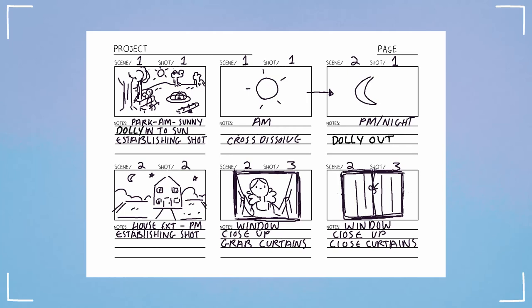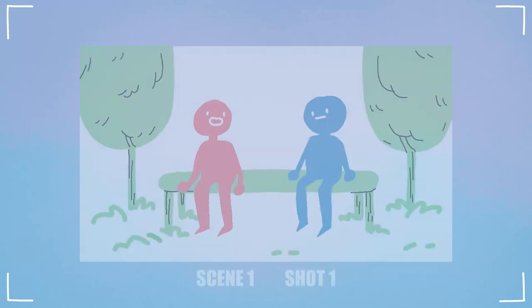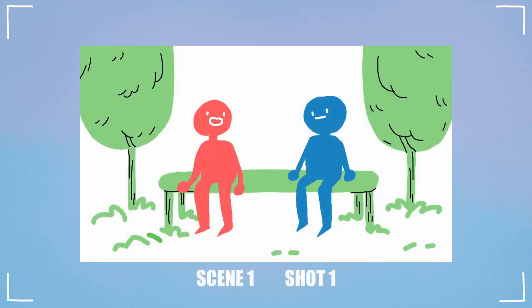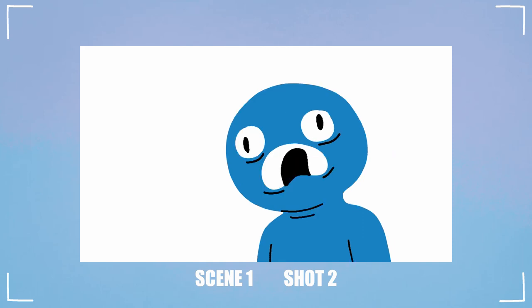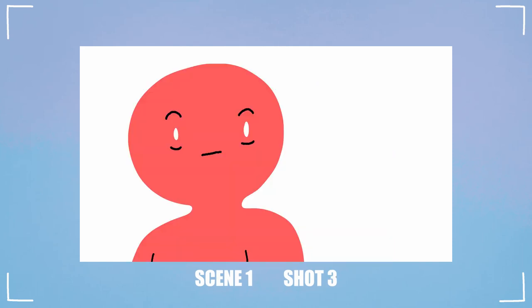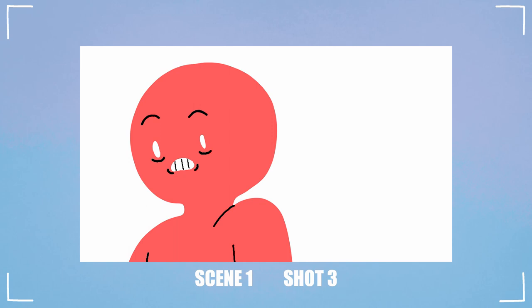Using different shots helps to keep things interesting. For example, if these two characters are talking for several minutes it can get a bit boring if the whole conversation takes place in a single shot. So depending on what you want to focus on — whether it's the character speaking or the reaction of the other character — your camera view will change.